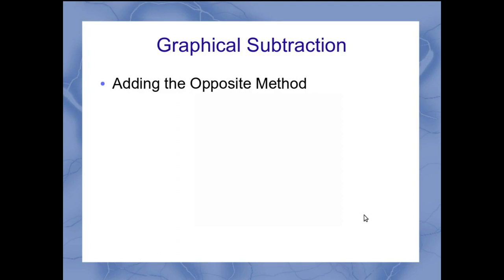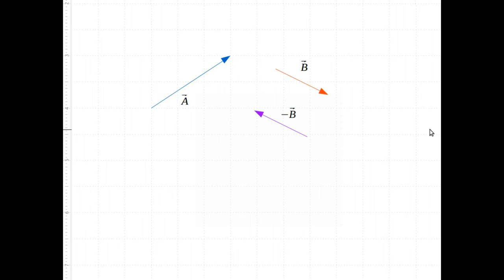So now let's look at an example of adding the opposite method. Let's take the example of vector a and vector b, shown here in the blue and the red. If this is vector b, I can define my negative b as a vector which is exactly equal but pointing in the opposite direction. And just to show you that it really is opposite, I can place it here over on top.